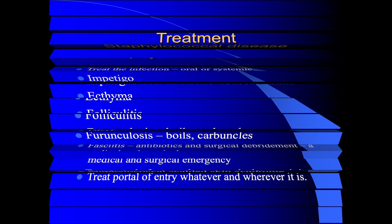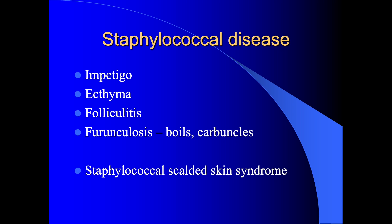Most skin staphylococcal disease is caused by Staphylococcus aureus. It can produce a superficial infection called impetigo, localised infections called ecthyma, infections of the hair follicles producing superficial folliculitis, or deeper infections of the hair follicles producing boils or carbuncles. Finally, there's an important condition called staphylococcal scalded skin syndrome, which we'll discuss in detail later.